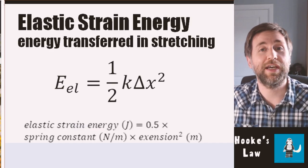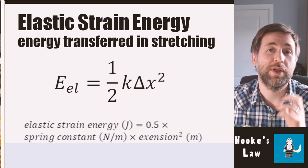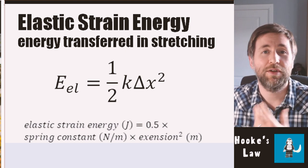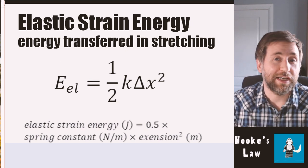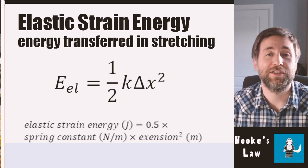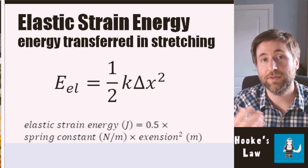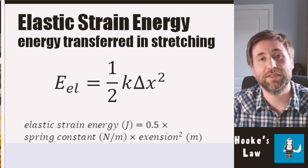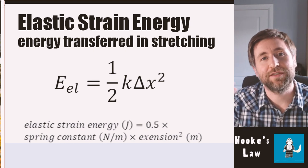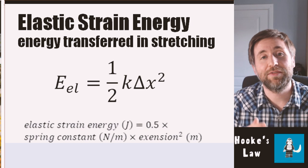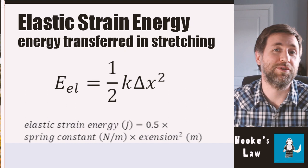To summarise: the energy stored in the spring is 0.5 k delta x squared. Energy is proportional to extension squared — double the extension, four times the energy. Remember Hooke's law is an easy concept — double the force, double the extension — but there are really tricky questions they can ask, such as the idea that energy is proportional to extension squared, that different objects have different spring constants, or interpreting data from graphs. Thanks for watching — this has been Gorilla Physics, where I show you how to get to grade 9.